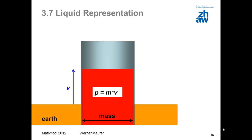Now let's look at the concept of liquid representation. A liquid representation shows the fundamental relations in mechanics. In this picture, momentum is shown as a fluid, a body is shown as a reservoir, and the body's mass corresponds to the cross-sectional area of the reservoir. The velocity is shown as a filling level, and the acceleration appears as velocity. The momentum is area times height, or mass times velocity.